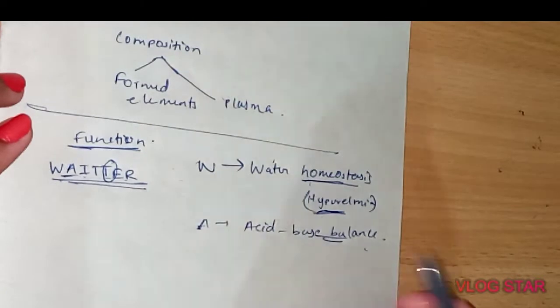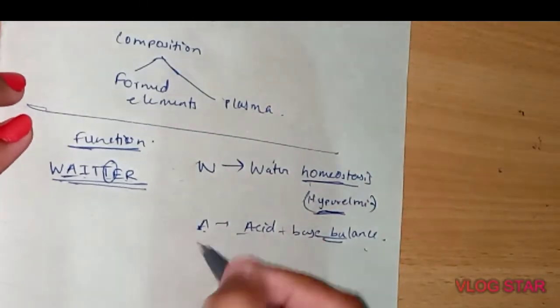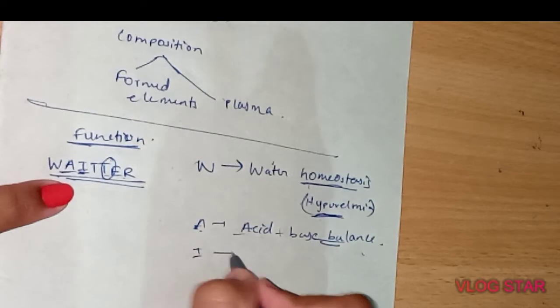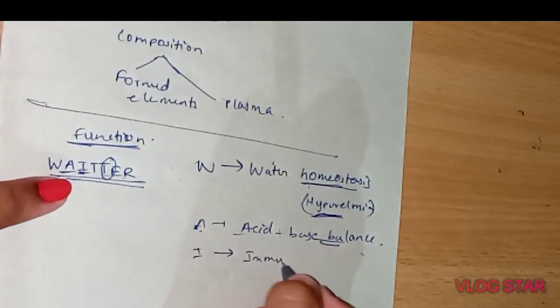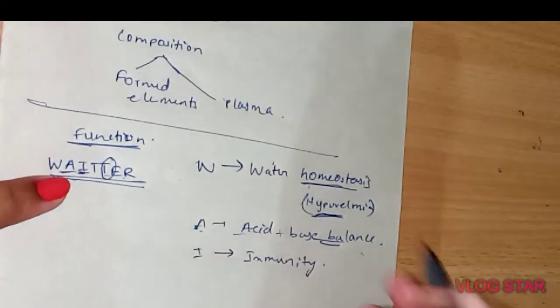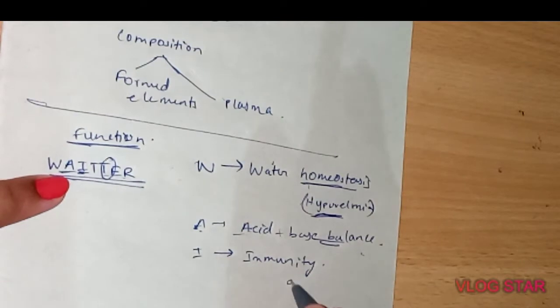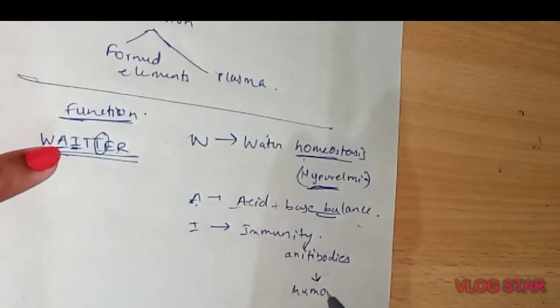Next, I is immunity. Normally blood contains antibodies which play an important role in humoral immunity.